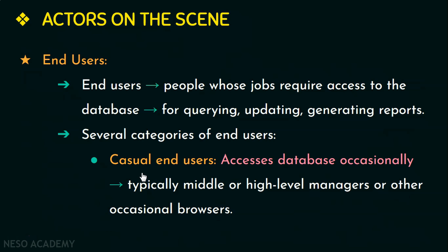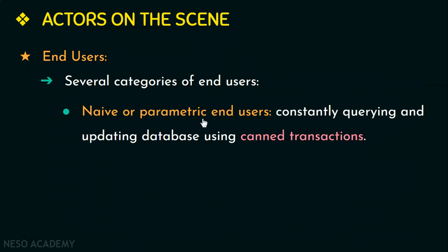The next category are the naive or parametric end users. These end users constantly query data from the database and update the database for changes using canned transactions — standard types of queries and updates. For example, a reservation agent for airlines, hotels, or trains checks availability and makes reservations on a daily basis using a predefined set of queries and updates.